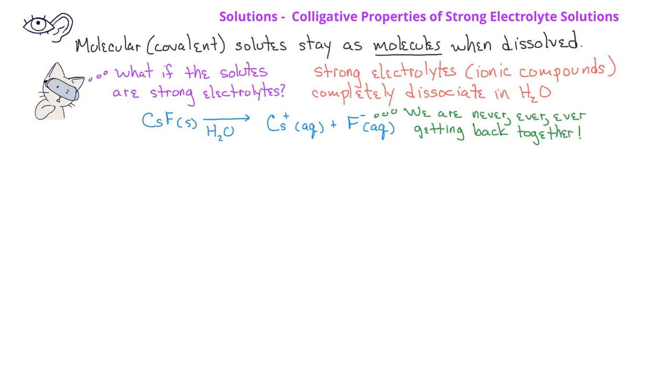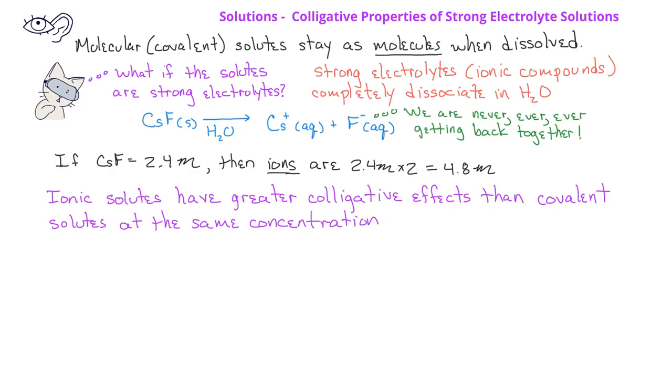So, now that we know the ionic compound has dissociated, how many solute particles are present in solution? If the cesium fluoride concentration was 2.4 molal, then the concentration of ions would be 2.4 times 2, because there are two ions, cesium ions and fluoride present. So the concentration of particles dissolved would be 4.8 molal. This means that ionic compounds have greater colligative effects than covalent solutes.